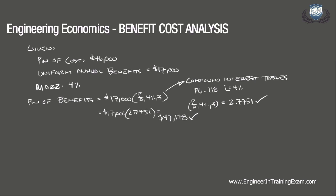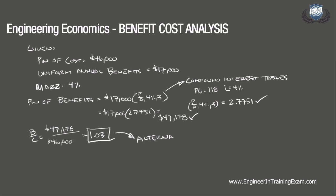Plugging in the values to determine the benefit cost ratio, we get B over C equals 47,177 divided by 46,000, and our benefit cost ratio is 1.03. The benefit cost ratio is 1.03, which is greater than 1, so alternative B, which is the higher cost alternative, is acceptable.